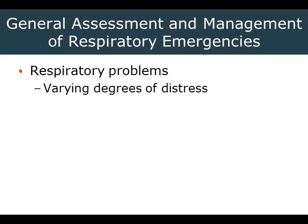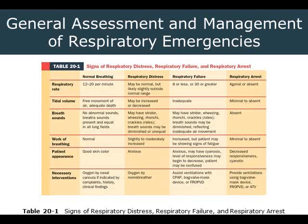As we start to talk about the various respiratory problems, we have to understand there are varying degrees of respiratory distress. Beyond normal breathing or eupnea, there are three major categories of respiratory insufficiency: respiratory distress, respiratory failure, and finally respiratory arrest. This chart should hopefully not be completely foreign to you — it would be a very good thing to commit to memory.